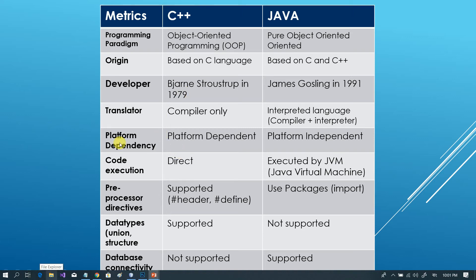Next is platform dependency. C++ is platform dependent, meaning the program runs on a specific platform. Java is platform independent, meaning you can write a program and run it on Windows, Mac, or Linux.